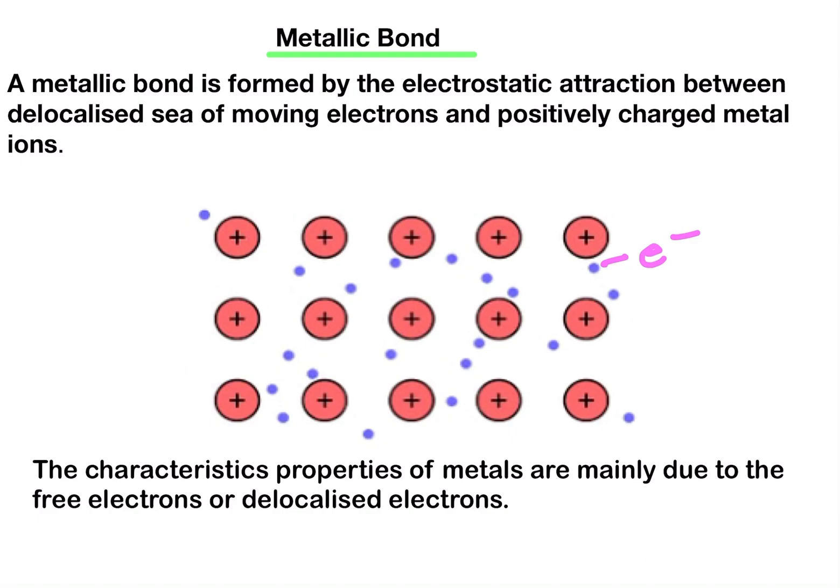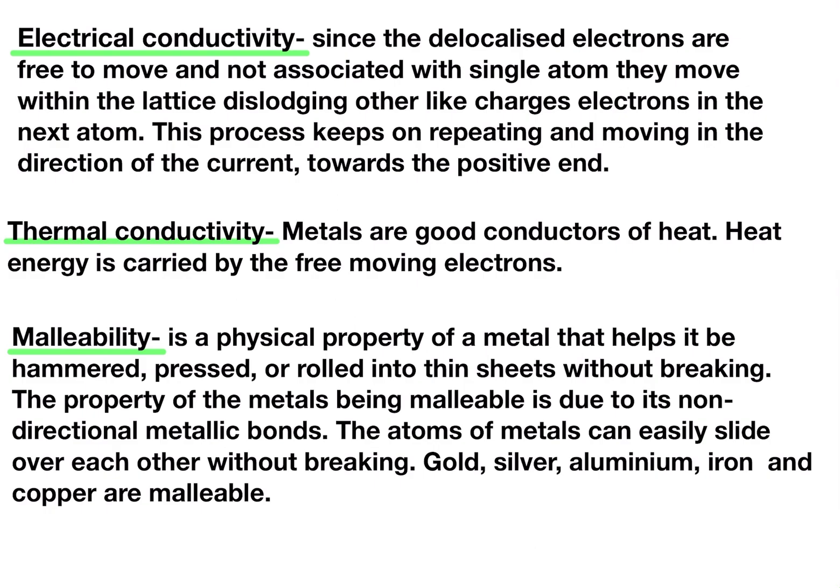Let's look at the characteristic properties of metals. These characteristics are mainly due to the free electrons, also called delocalized electrons. The first property is electrical conductivity. Since the delocalized electrons are free to move and not associated with a single atom, they move within the lattice, dislodging other like-charged electrons in the next atom. This process keeps on repeating, moving in the direction of the current towards the positive end, and thus electrical conductivity is achieved.